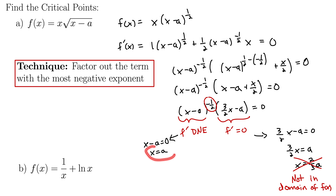Now consider x equals a — that is in the domain of our function. It's a critical point because the derivative does not exist there. So x equals a is indeed our only critical point. These are advanced algebraic techniques, but I recommend getting used to them, especially when dealing with negative rational exponents with multiple terms.